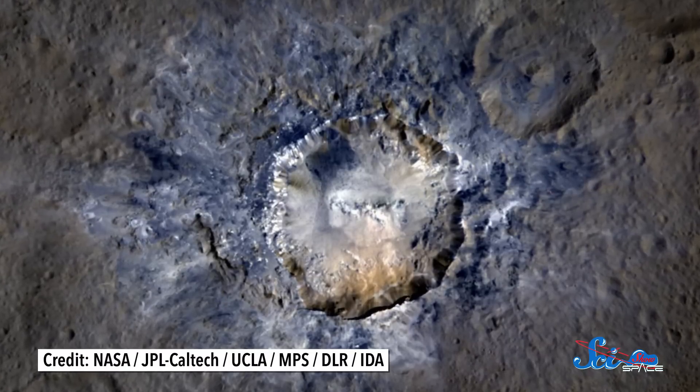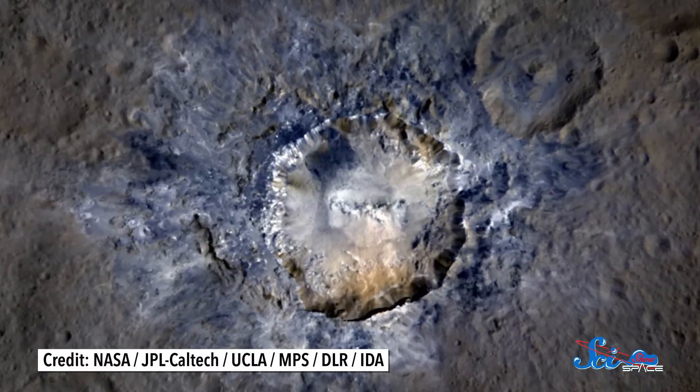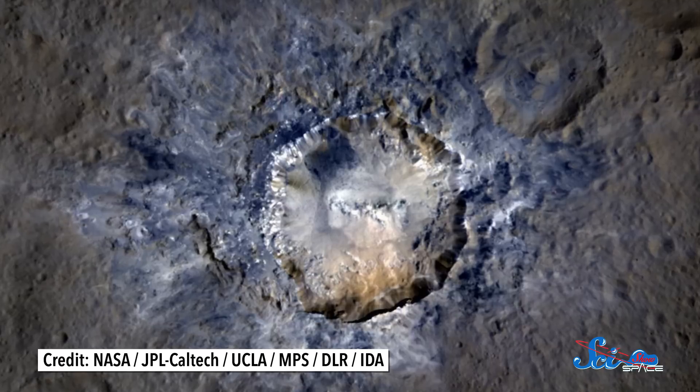The salt deposits were probably created when asteroids smashed into Ceres' surface, exposing the salt-filled ice that was hidden beneath. Then the exposed ice turned into a vapor, and the salt deposits were left behind.